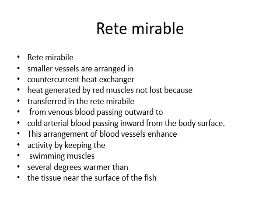Rete mirabile are smaller vessels arranged in a counter-current exchange mechanism. Heat generated by the red muscles is not lost because it is transferred in the rete mirabile from venous blood passing outward to colder arterial blood passing inward from the body surface. This arrangement of vessels enhances activation by the swimming muscles. When blood passes through the swimming muscles, the muscles swim and produce heat, so the blood carries more heat — several degrees warmer than the tissue near the surface of the fish.